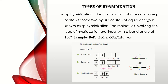Examples of SP hybridization include BEF2, BCL2, CO2, C2H5, etc. Taking BEF2 as an example: Beryllium's ground state configuration is 1S2, 2S2, 2P2, so the valency shell configuration is 2S2, 2P2. To combine with two fluorines, one electron from S is promoted to P, giving excited state 1S2, 2S1, 2P1. Now we have two singly filled orbitals which combine with the two fluorines, giving SP hybridization with linear geometry and bond angle of 180 degrees.